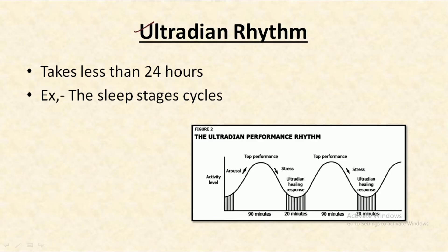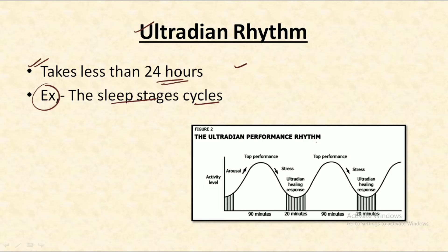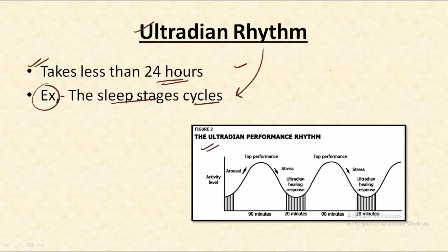Ultradian rhythms are biological clocks that take less than 24 hours to complete. The most common example is the sleep stage cycle. As you can see in the figure, just remember that these rhythms are the ones that take less than 24 hours to get completed, and the most common example is the sleep stage cycles.